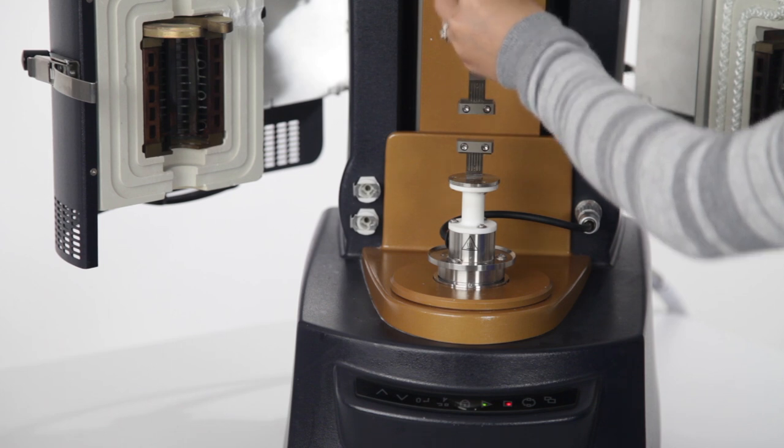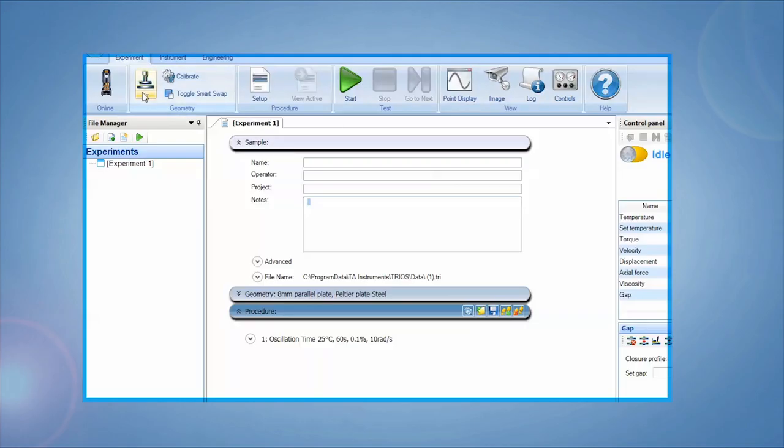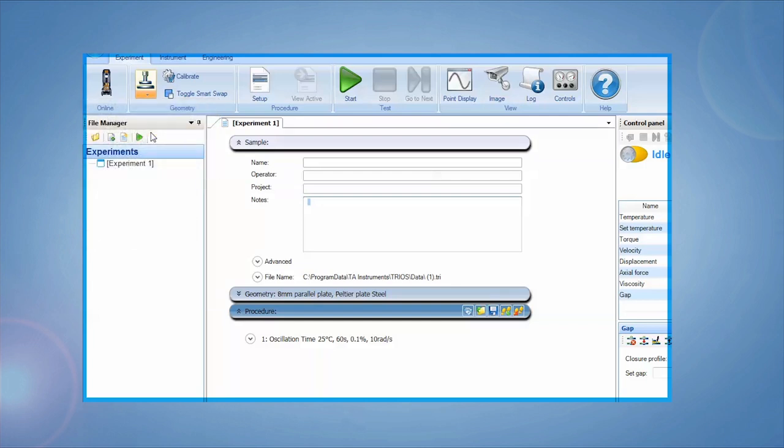After mounting the fixtures to the DHR, choose the linear tension geometry from the drop-down menu in the TRIOS ribbon and zero the gap.